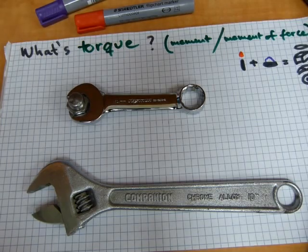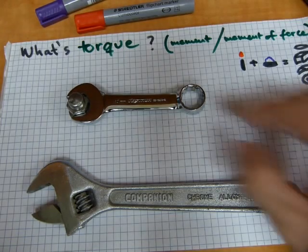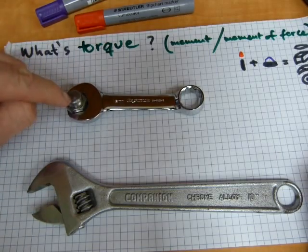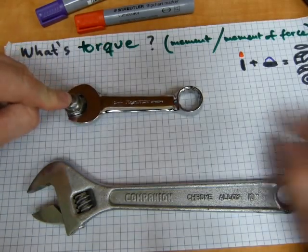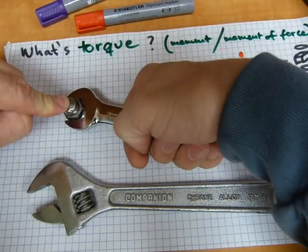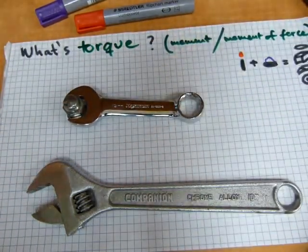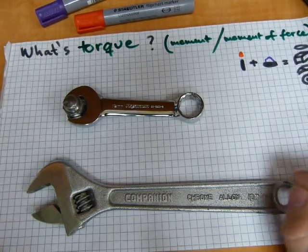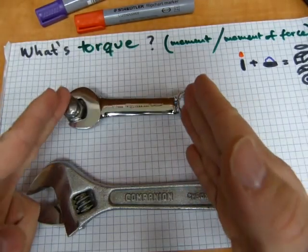By definition, torque is a measure of how much a force that you can exert causes an object to rotate. You want this object to rotate, you're exerting some force and you're generating torque. Torque is not force, torque is a product of force and leverage.